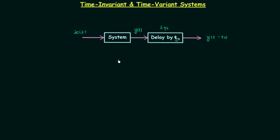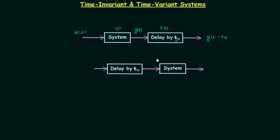In the second step, I want to switch the position of the first system and the delay system. Why? Because I want to provide the delay to the input itself instead of to the output. I will then pass the delayed input through the system and check if the two outputs are the same. You can see here the first system is now the delay system and the second is the system under analysis.